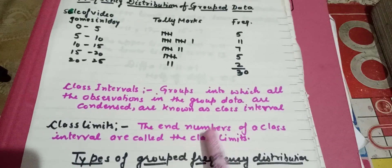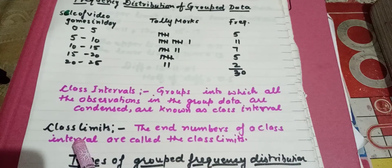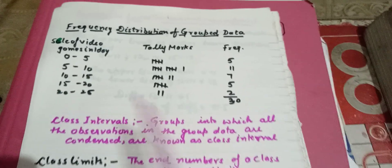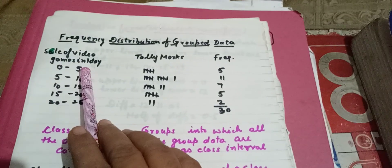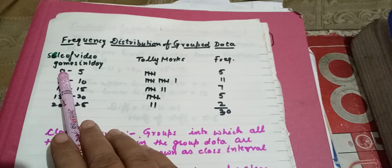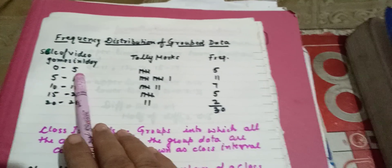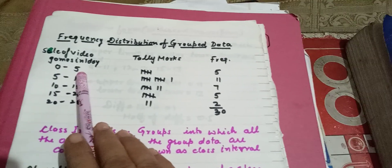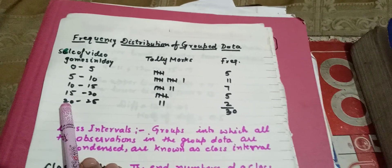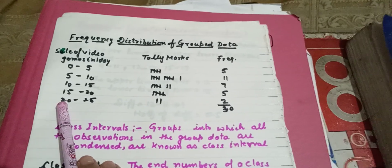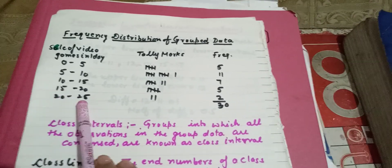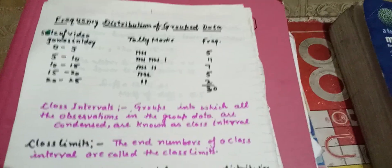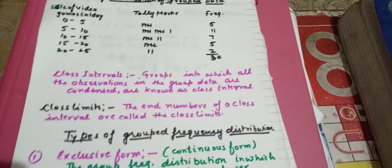The next thing we have is class limits. The end numbers of a class interval are called the class limits. For example in 0 to 5, zero is the lower limit and five is the upper limit. Similarly, in the fifth interval, 20 is the lower limit and 25 is the upper limit.